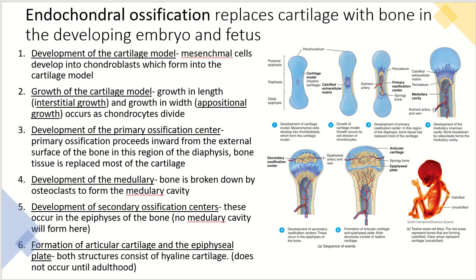The second step is the growth of that cartilage model. Growth in length, which is interstitial growth, and growth in width, which is called appositional growth, occurs as those chondrocytes — those cartilage cells — divide.